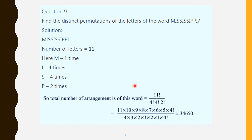Question number 9: The word given is MISSISSIPPI. Total number of letters is 11. M appears 1 time, I appears 4 times, S appears 4 times, P appears 2 times. The numerator is 11 factorial. Denominator: 1 factorial for M, 4 factorial for I, 4 factorial for S, 2 factorial for P. Now, 11 factorial equals 11 × 10 × 9 × 8 × 7 × 6 × 5 × 4 factorial; the 4 factorial cancels, leaving the remaining numbers simplified. The answer is 34,650.